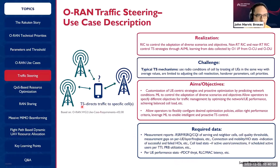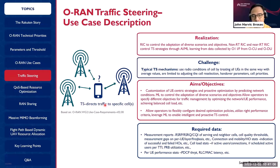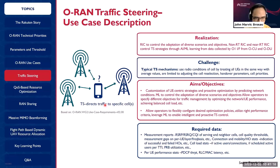Traffic steering directs traffic to specific cells. Going back to our discussion on mobility — if you move from cell A to cell B, you check the threshold. Once you've breached that threshold and the neighbor signal is stronger, you hand over to that neighbor cell.